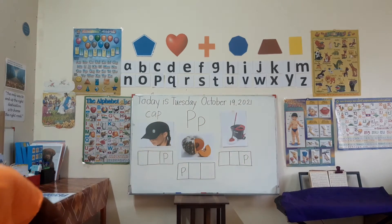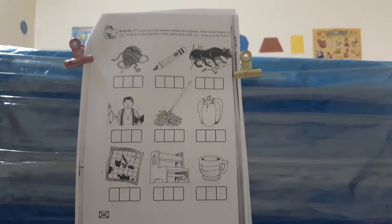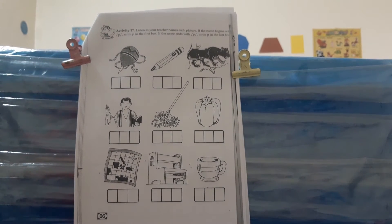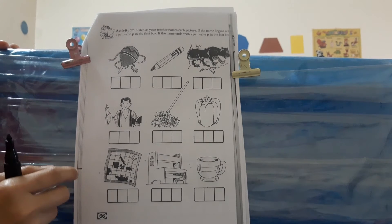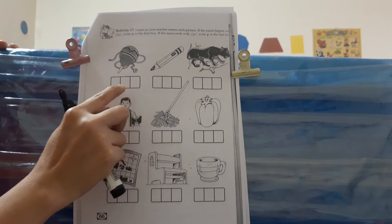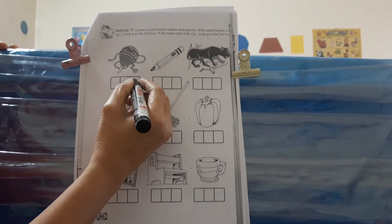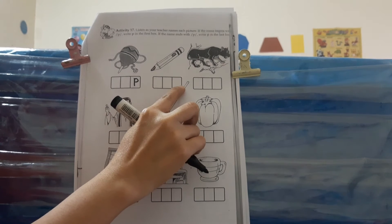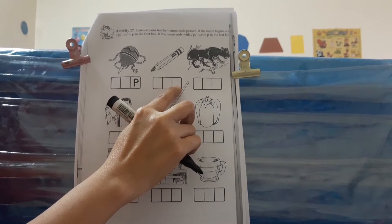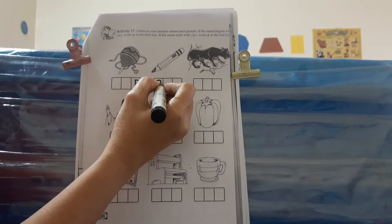Now let's go to your activity. Children, get your paper and let's answer the activity together. Okay, can you see my paper? So teacher, what is this? This is called top. Top. Where is the P sound? Where do you hear the P sound? Top — it's here at the end. So write the P sound here. And this one is pencil. Pencil. Where is the P sound? It's here at the beginning. So write the P here.